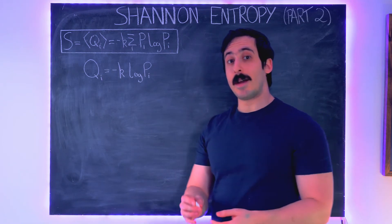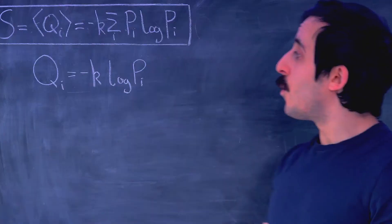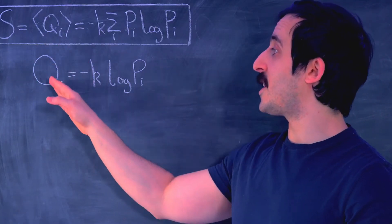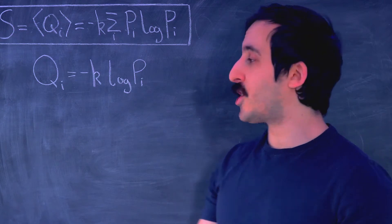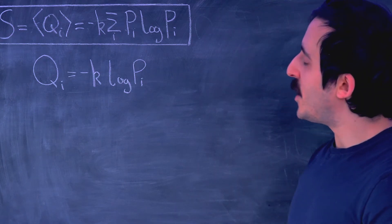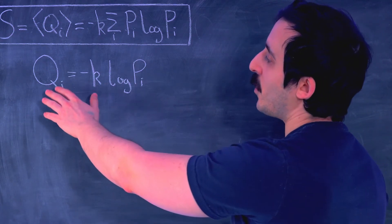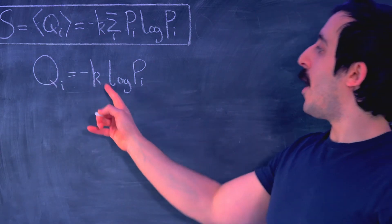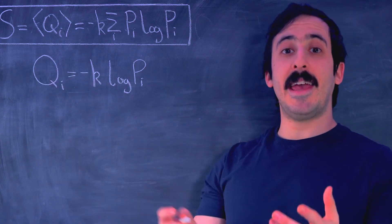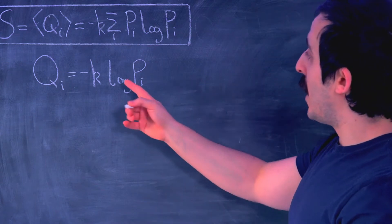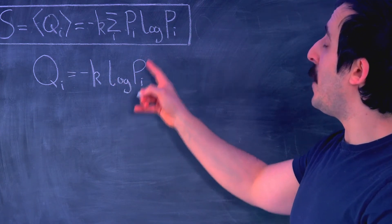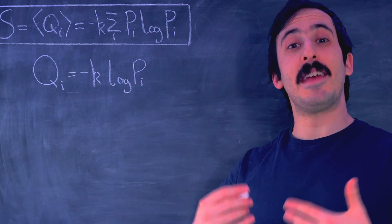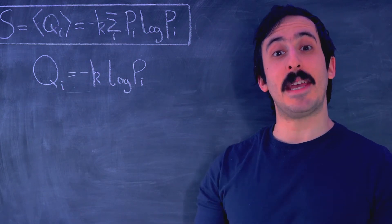But in the last video, just to recap very briefly, we discussed the definition for information content Q, which was put forward by Shannon. Shannon said that the information content of some statement i, qi, is equal to minus k — where k is a positive constant — multiplied by the log of pi, where pi is the probability of that event happening or that statement being true.